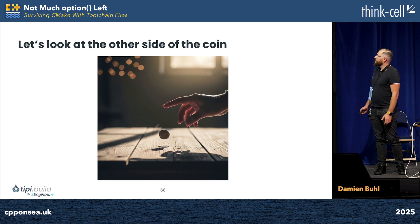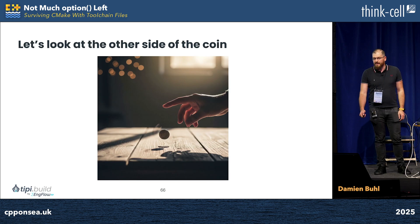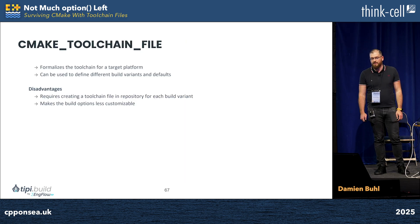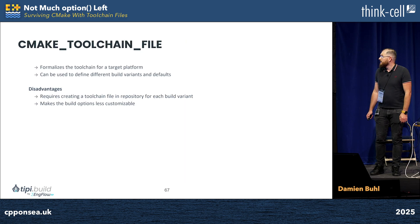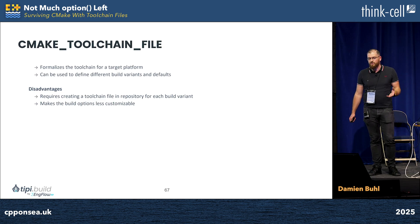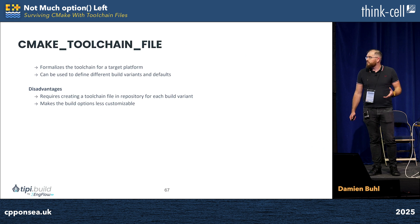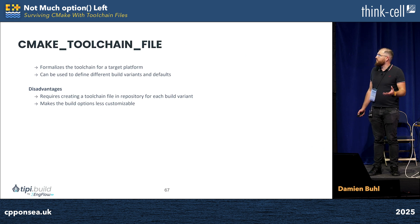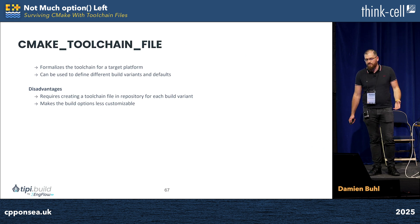But on any coin there is another side, and if you flip it, we can also see the disadvantages. For every build variant you need, you basically need to create a new toolchain file, make the build option, and actually have a file per option. This makes the life a bit less customizable.